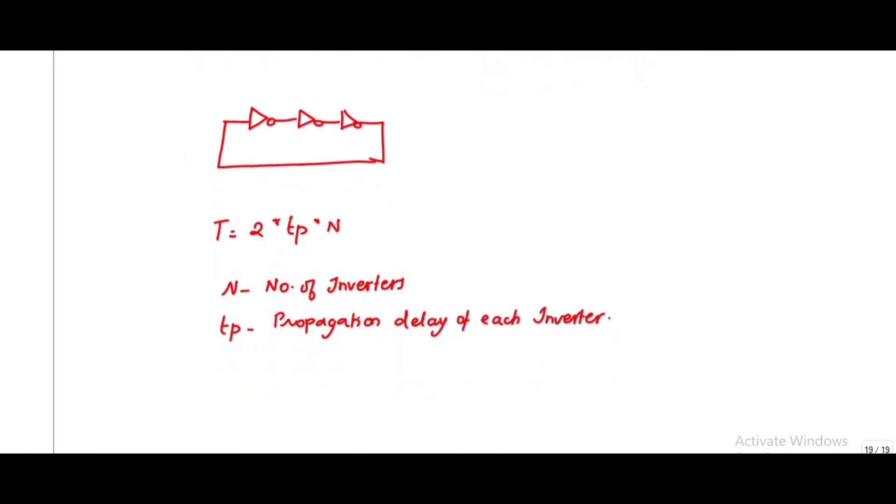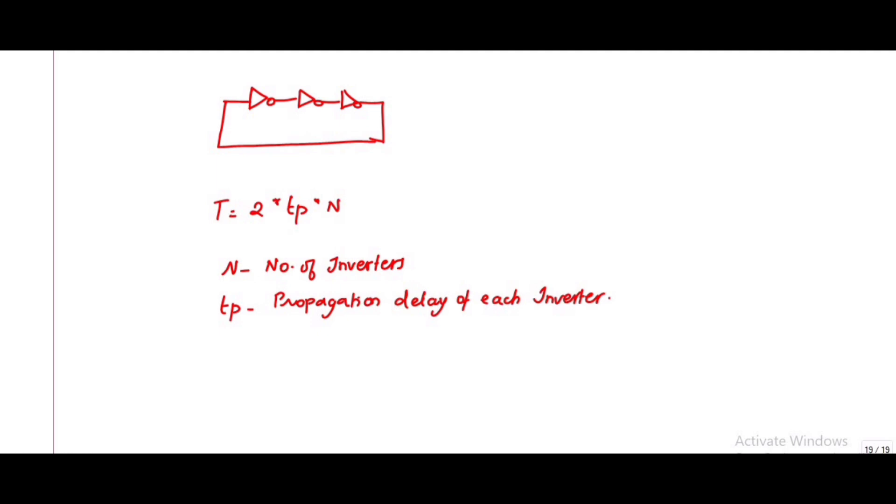This is a block diagram of the ring oscillator. You can see an odd number of inverters are connected. The output of the third inverter is connected to the input of the first inverter. The time period is equal to 2 times tp times N, where N represents the number of inverters and tp represents the propagation delay of each inverter.